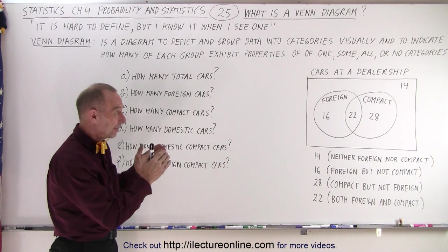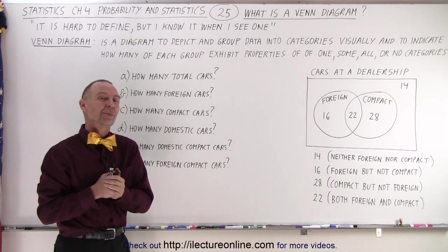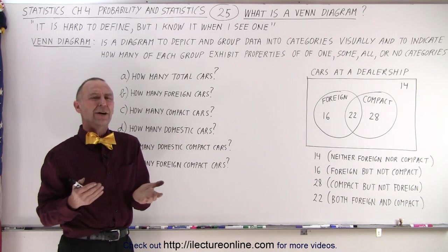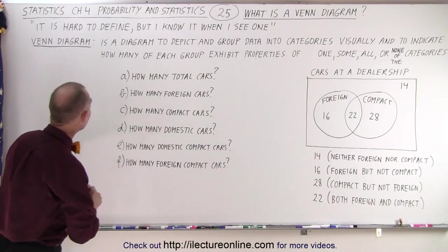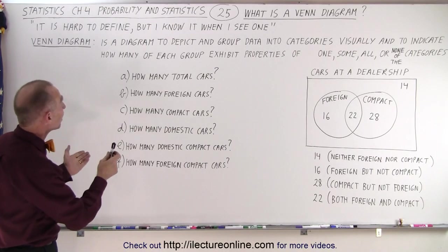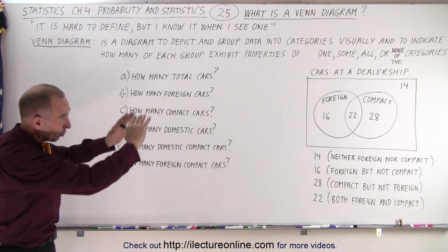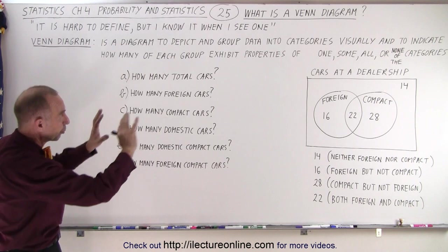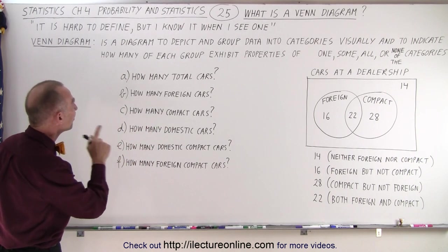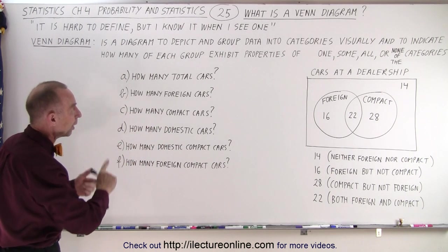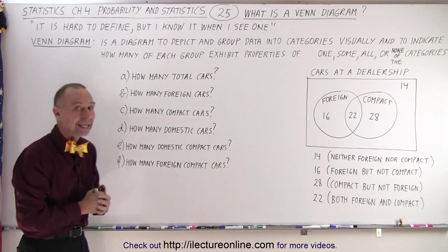Well, it turns out everybody recognizes a Venn diagram when they see one, but how do you define it? One way to define it might be as follows: it is a diagram to depict and group data into categories visually, so you have the visualization of the grouping in categories, and to indicate how many of each group exhibit properties of one, some, all, or none of the categories.